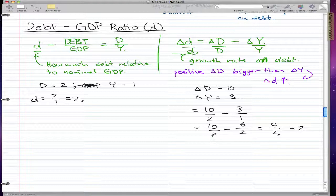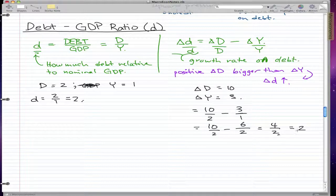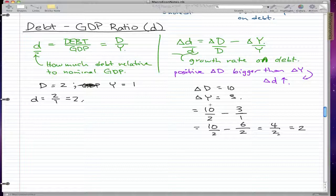So what we found is that after accounting for GDP growth, our total debt is 4, and our debt-to-GDP ratio was 2. The growth rate on debt is 2, so if you take 2 times 2 you get 4, which is the debt we end up with at the end of the year. That's all I want to cover in this video — please comment, rate, and subscribe, and I'll see you in the next one.